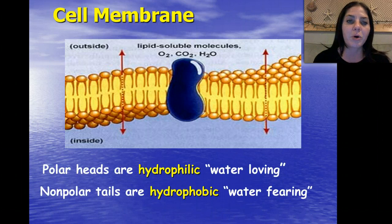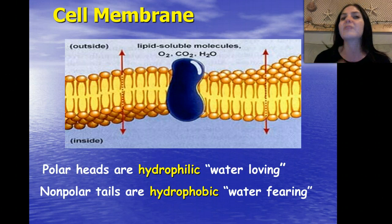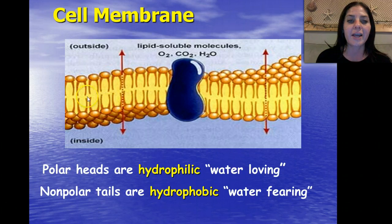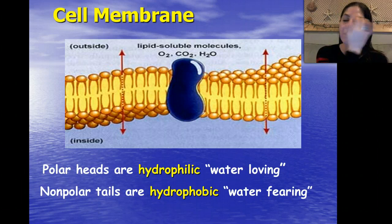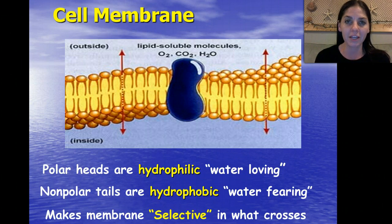The cell membrane has polar heads, which are hydrophilic, meaning they love water. Polar means they have a charge — water is a polar molecule, so the outside of the plasma membrane loves water. Hydro means water, and philic means to love. Then we have our nonpolar tails, where we find the majority of our fats. Fats are nonpolar, so they are hydrophobic because they fear water.